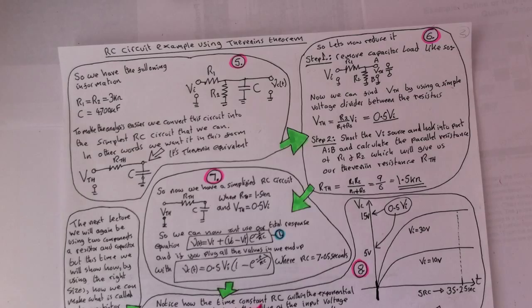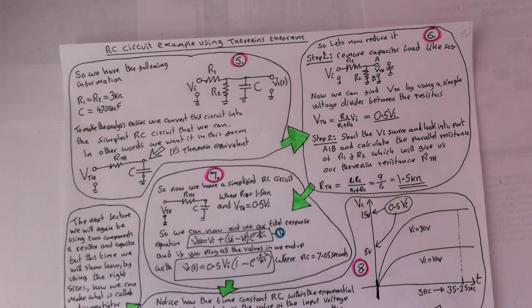Notice how the time constant, the RC time constant within the exponential term here, is independent of the value of the input voltage. So 5RC, so multiply 5 times RC, will take 35.25 seconds to charge the capacitor, whether we use 10 volts or 30 volts or 300 volts for the input voltage.